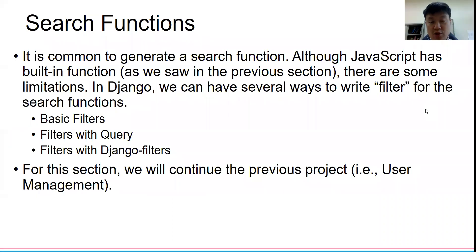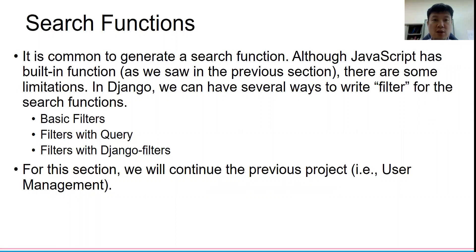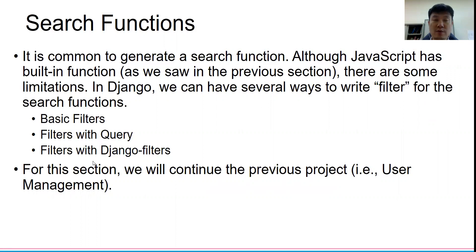We already saw in the previous section that JavaScript's built-in filter has some limitations — it just uses a particular string. If you want to filter numbers or do another kind of filtering, you need to improve that. So we are going to learn how to do basic filters, filters with query, and filters with Django Filters — there is a library in Django we call Django Filters.